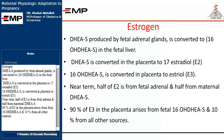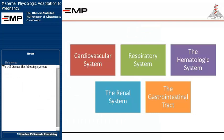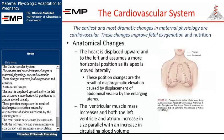We will now discuss the cardiovascular system. The earliest and most dramatic changes in maternal physiology are cardiovascular, and these changes improve fetal oxygenation and nutrition. Anatomically, the heart is displaced upward and to the left, assuming a more horizontal position as its apex is moved laterally. These position changes result from diaphragmatic elevation caused by displacement of abdominal viscera by the enlarging uterus. The ventricular muscle mass increases and both the left ventricle and atrium increase in size, parallel with an increase in circulating blood volume.